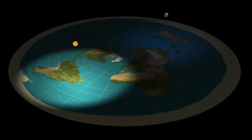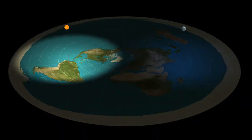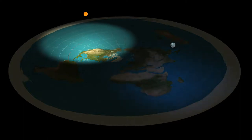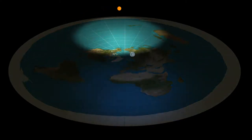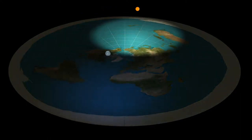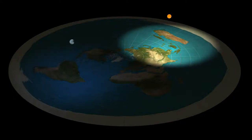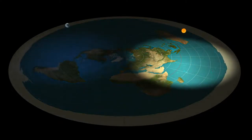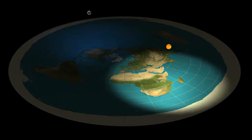The flat earth model is based on an azimuthal equidistant projection map centered on the north pole, with the sun and the moon orbiting at about 5,000 kilometers altitude. One claim stated repeatedly by the proponents of this model...